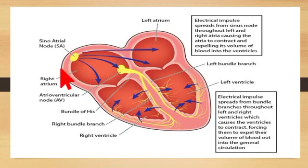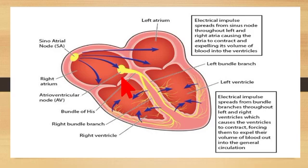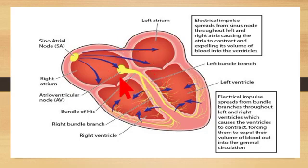The electrical impulse generated at the sinoatrial node travels to the right atrium and the left atrium. When the atria contract, the electrical impulse is received by the atrioventricular node, which is present at the junction of the atria and ventricles. The atrioventricular node momentarily slows down the spread of the electrical impulse to allow the left atrium and the right atrium to finish contracting.